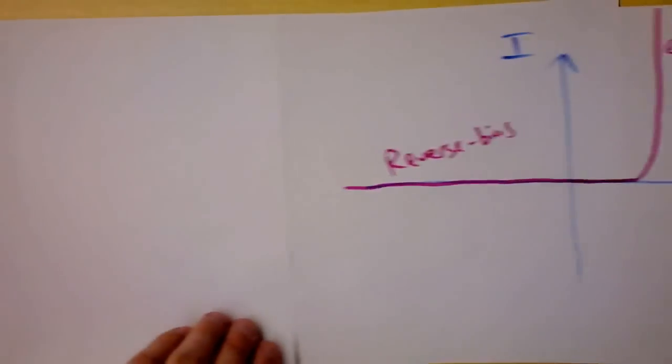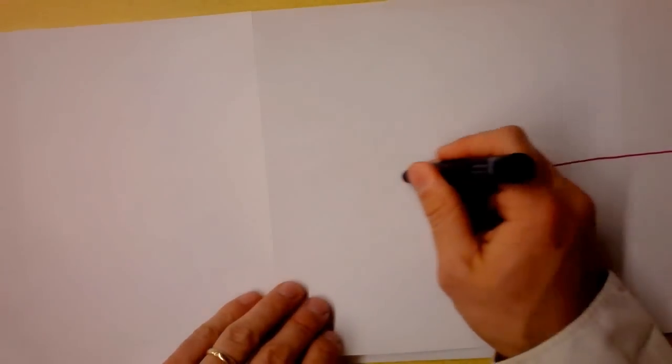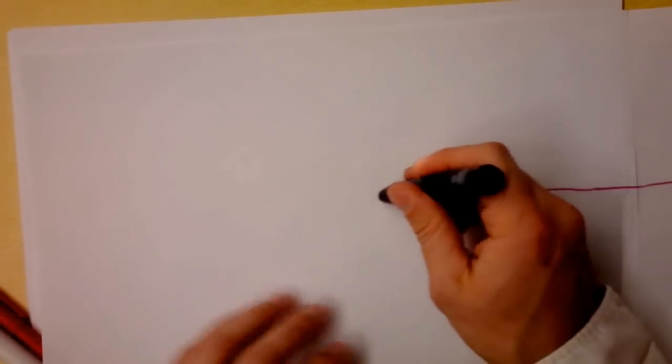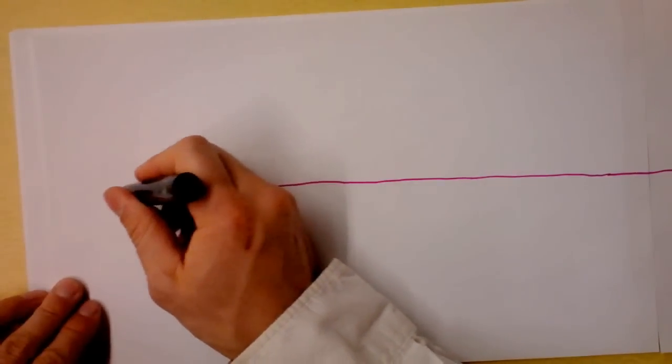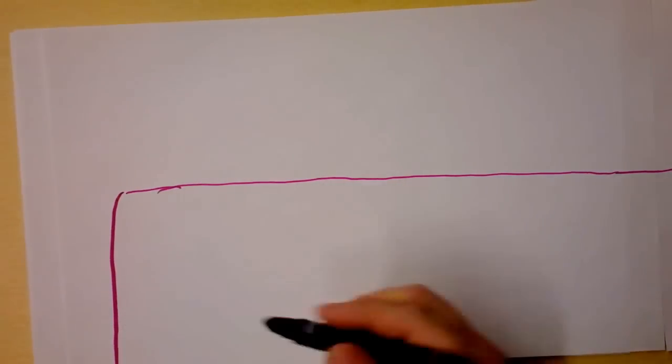But we can continue on a little bit and see what happens. If we continue on, if we continue going over here, ultimately, we're going to reach the breakdown voltage of the diode way over here. It's very, very big, and some diodes are actually used in this range. Many of them will be destroyed if you do this,